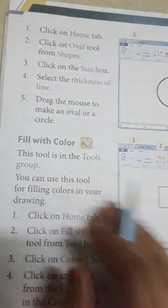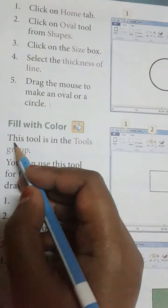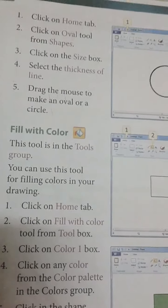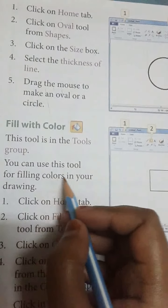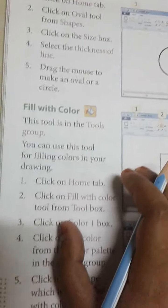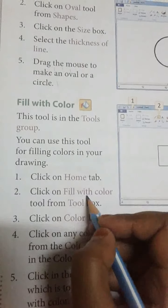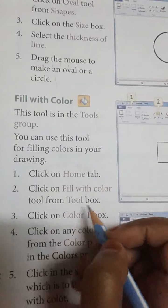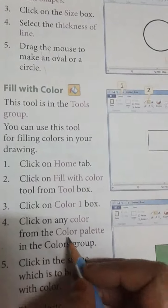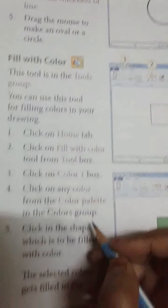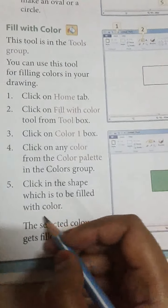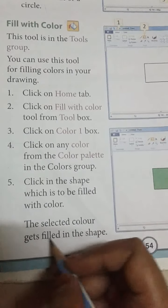Now, fill with color. This tool is in the tool group. You can use this tool to fill color in your drawing. Steps: Click on the Home tab, click on the fill with color tool from the tool box, click on color 1 box, click on any color from the color patterns in the color group, then click inside the shape which is to be filled with color. The selected color will be filled in the shape.